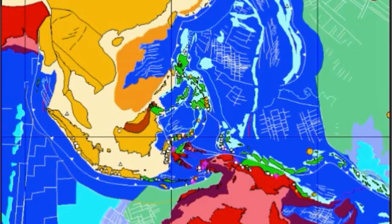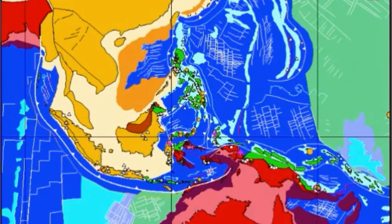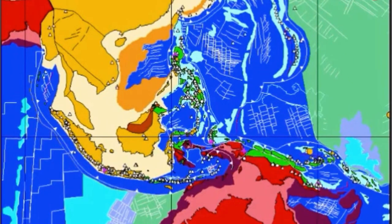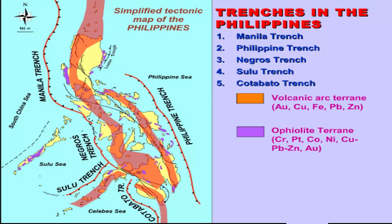The Philippine Mobile Belt eventually collided with the Sundaland block, which explains the presence of trenches such as the Manila to Negroes to Cotabato Trench System and the Sulu Trench. On the eastern side of the Philippines, trenches like the Philippine Trench and East Luzon Trough are both products of the subducting Philippine Sea Plate beneath the archipelago.